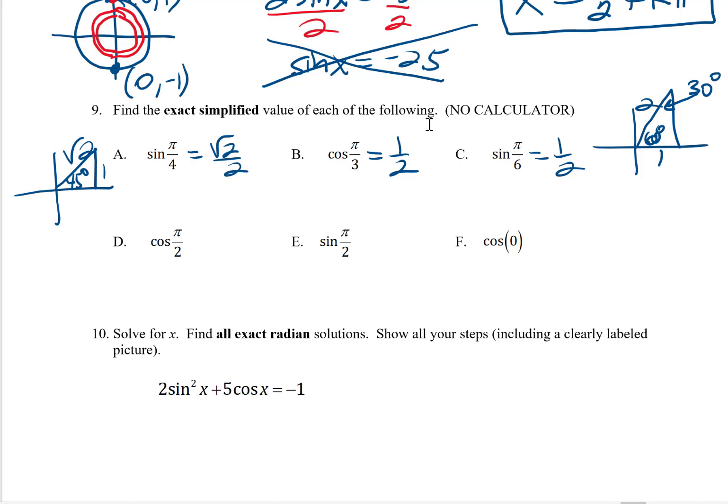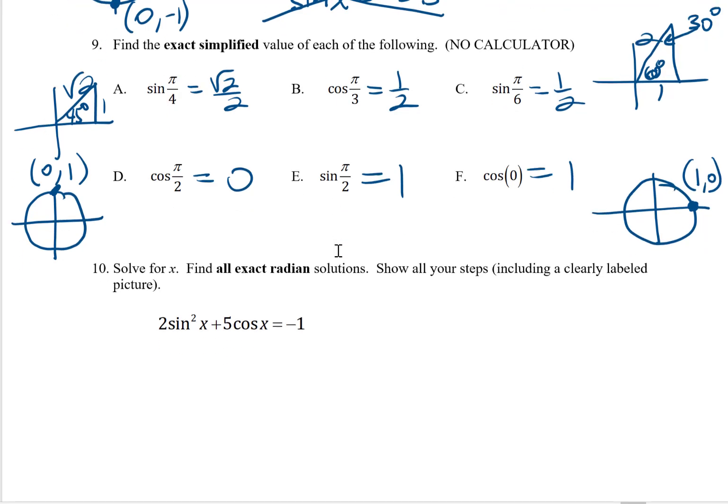Cosine pi over 2, that's a unit circle answer. Pi over 2 is up there at the top, at the point (0,1). Cosine gives you the x, so this would be 0. Sine gives you the y, so this would be 1. And then cosine 0 would also be, on the unit circle, would be this spot here. This is the point (1, 0). Cosine 0 would be the 1.